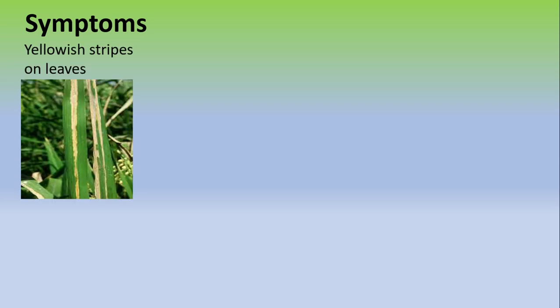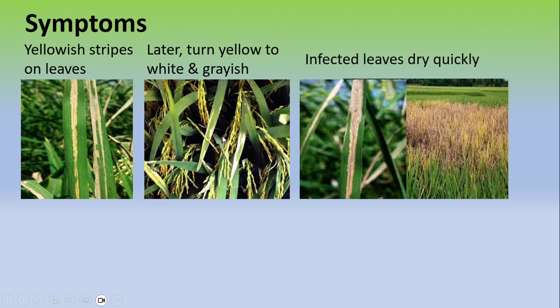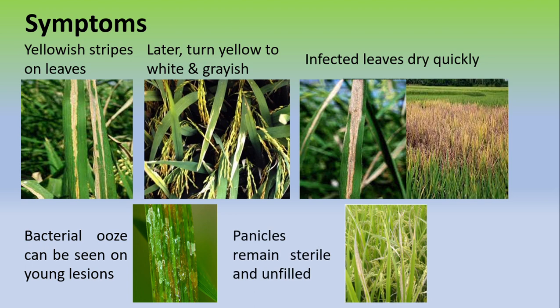What are the symptoms of bacterial blight of rice? Yellow stripes on leaves appear — here you can see these yellow lines or stripes on the leaves — and later on these stripes turn white and gray. Here you can see the white or gray color of these lesions, and after infection the infected leaves dry quickly. In young tillers, bacterial ooze can be seen, and panicles remain sterile and unfilled with no grain filling.